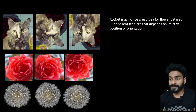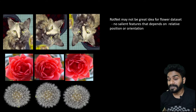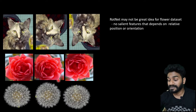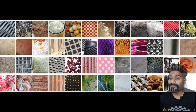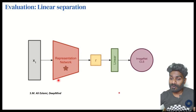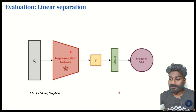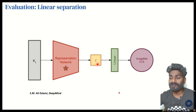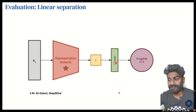I hope you got the idea why RotNet would not be great for this kind of dataset, including the flowers dataset. Now let's move to the main topic of this video: linear separation. We have the input, the representation network, and we try to learn it with a linear classifier, say logistic regression.